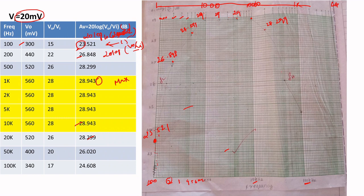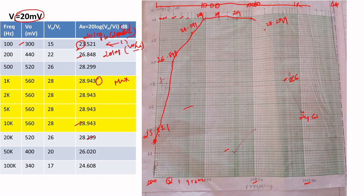For 50kHz, the value is approximately 26. For 100kHz, that is the multiple of 10,000, the value is 24.608. Now you want to join this curve to get the frequency response for your observed data. This is your real response curve.